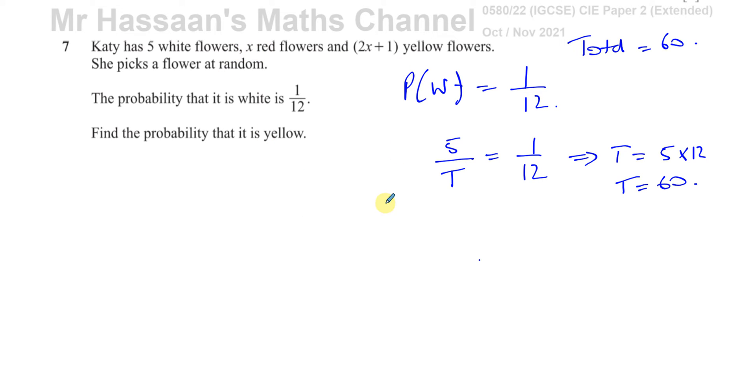If we want to find the number of red and yellow flowers, we can say 5 plus x plus 2x plus 1 must equal 60. We can solve this equation to find x, which is the number of red flowers, and therefore find the number of yellow flowers. That's 3x plus 6 equals 60.